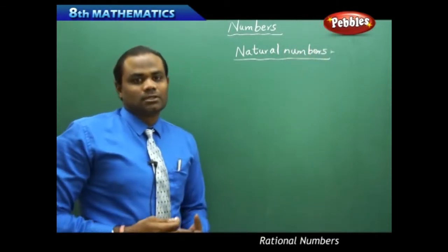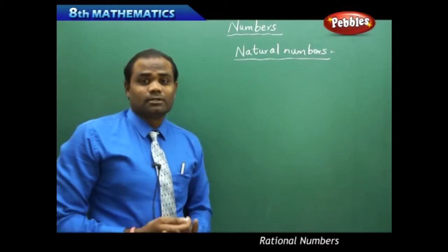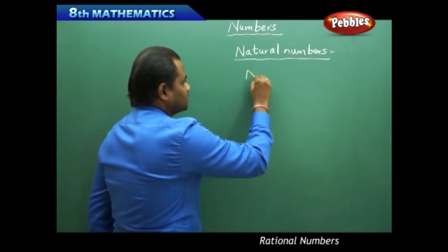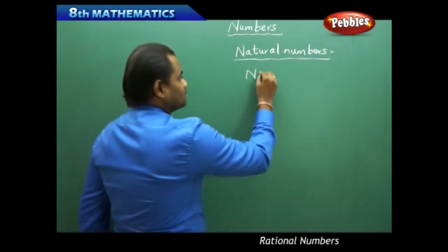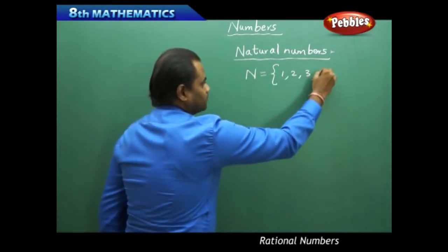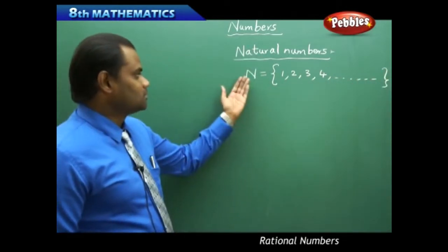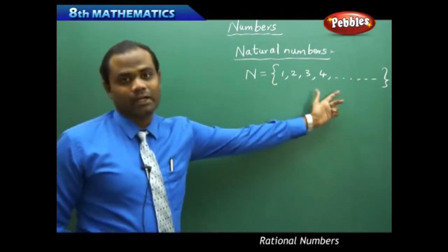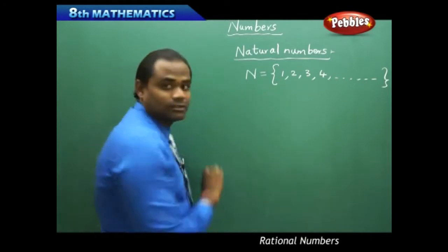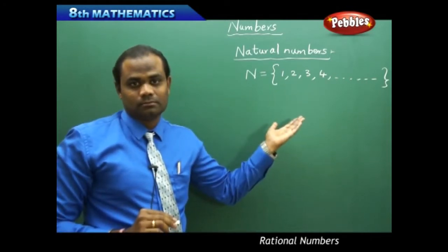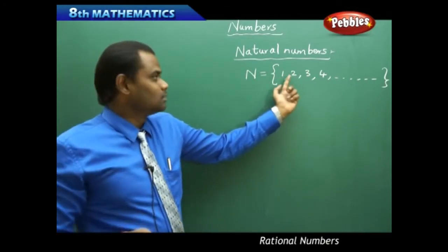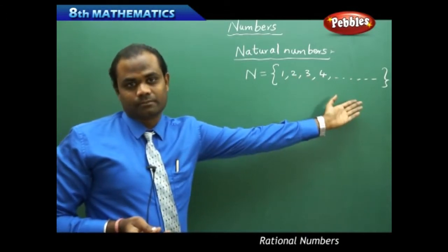Natural numbers are the numbers which are expressed in the numerator form but they do not have a denominator. They are generally denoted with N, and the set of natural numbers starts with 1, 2, 3, 4, and so on till infinity. They don't have a denominator but only the numerator, starting with one and going consecutively till infinity.